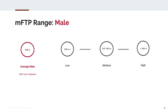For modeled FTP ranges in males, the average is about 296 watts — low is 246 watts or below, and high is above 346 watts. These are not weight-adjusted, so doing this by watts per kilogram might give deeper insight. For females, the average is about 219 watts, with 191 watts being low and above 247 watts being high.